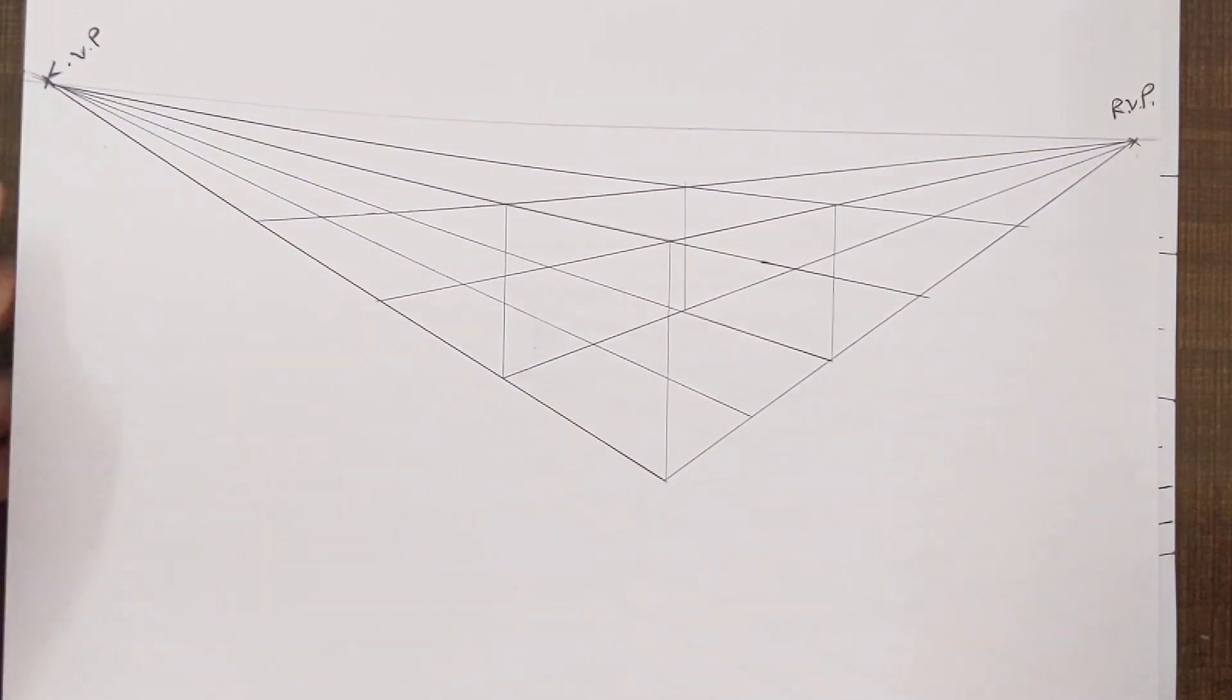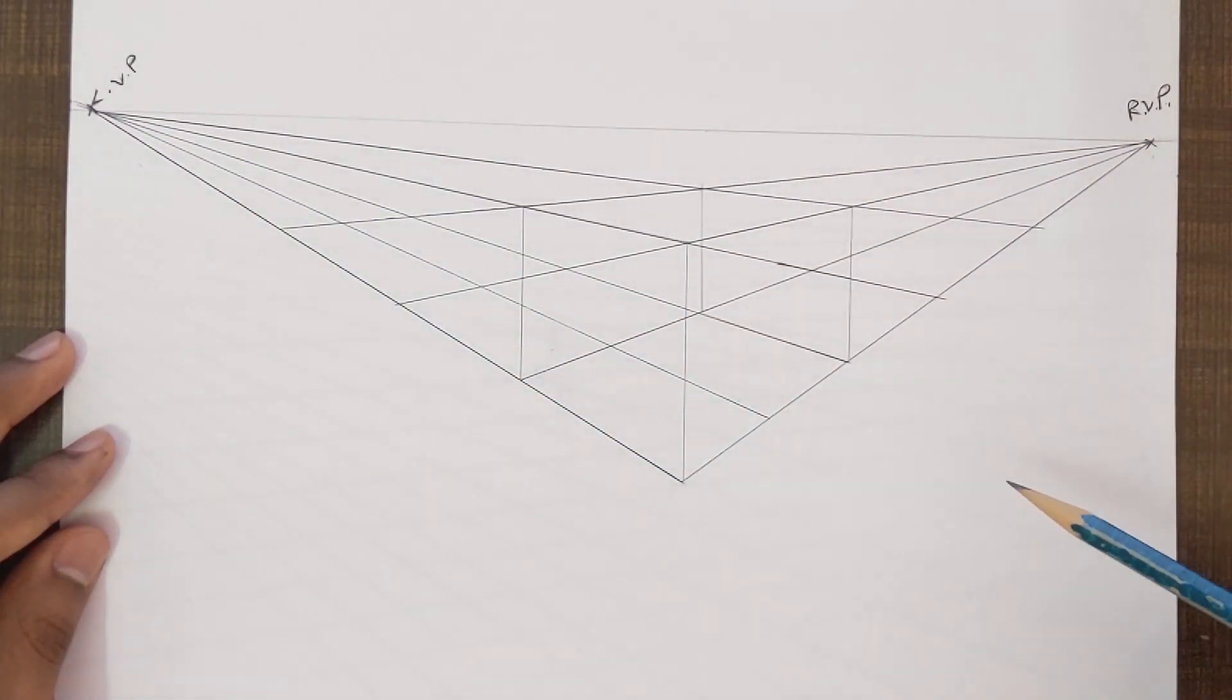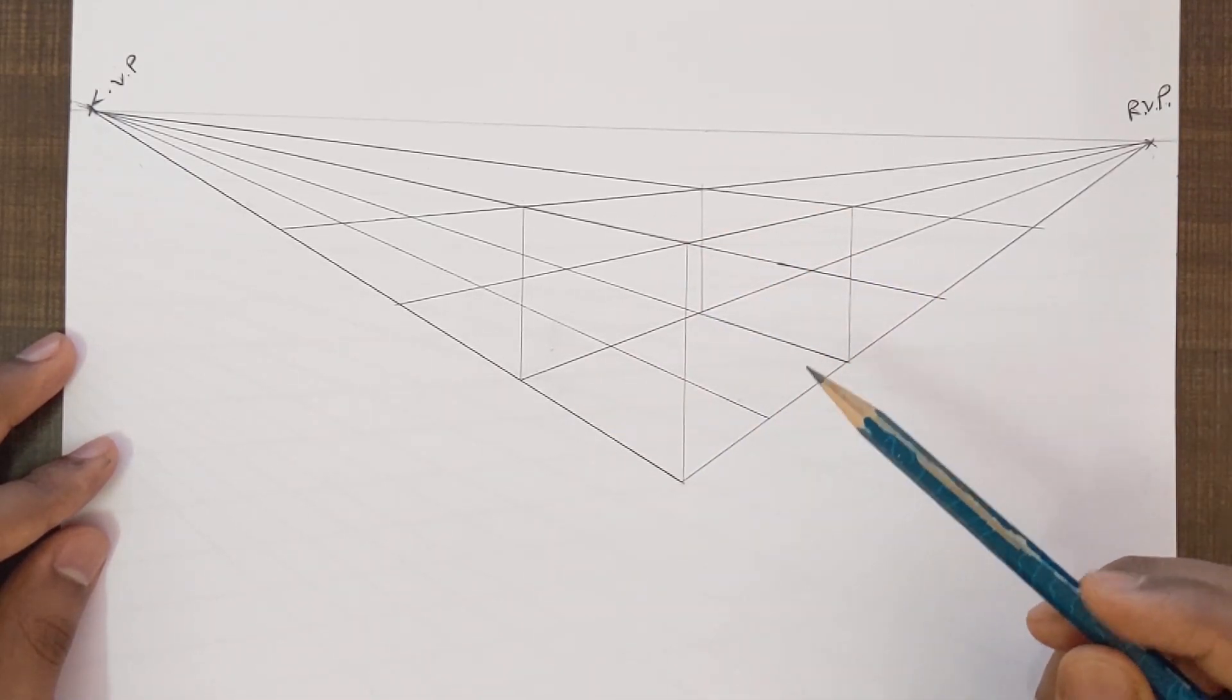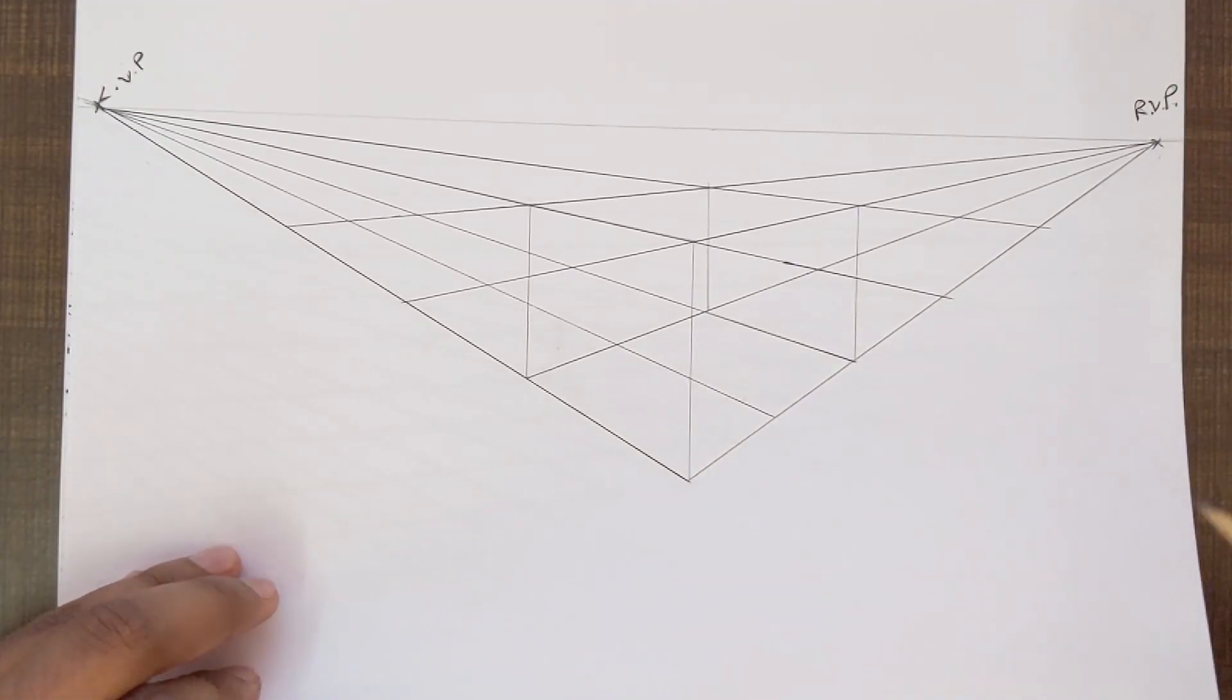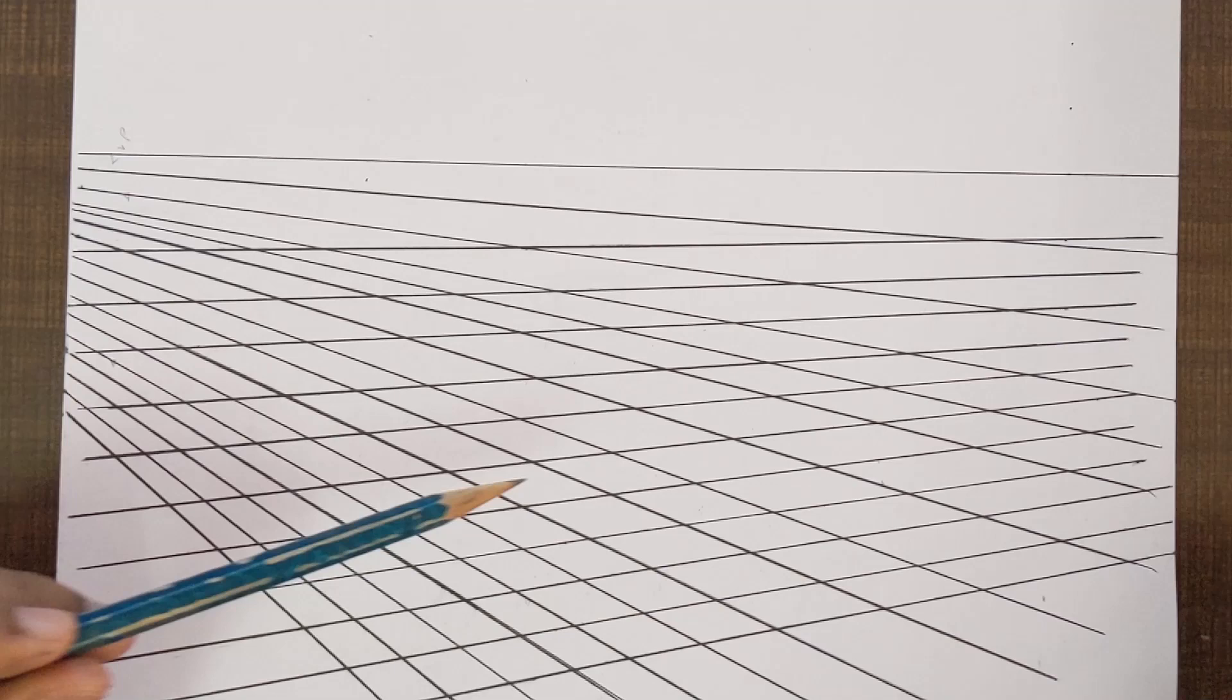When you construct a grid where the vanishing points are on the page, bigger size objects tend to look distorted. To overcome this problem, we need to construct a proper two-point perspective grid where the vanishing points are off the page, and in doing so you can draw objects of decent size with less distortion.